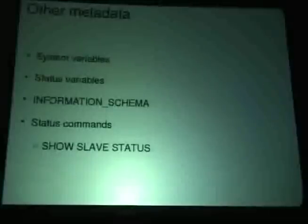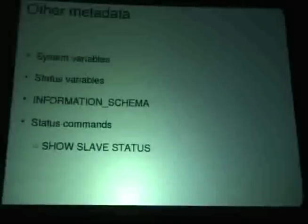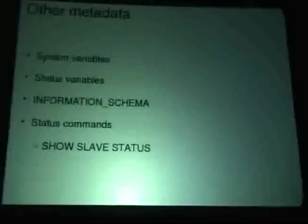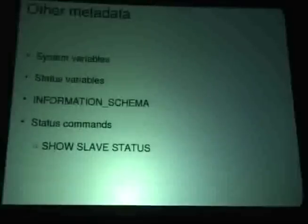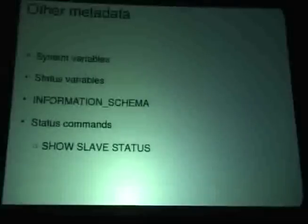Other metadata includes system variables and status variables — you've probably seen SHOW GLOBAL STATUS and SHOW GLOBAL VARIABLES. The information schema has many tables, but there are also status commands not captured there. For example, SHOW SLAVE STATUS has no equivalent in the information schema — it's the only way to get that replication metadata.